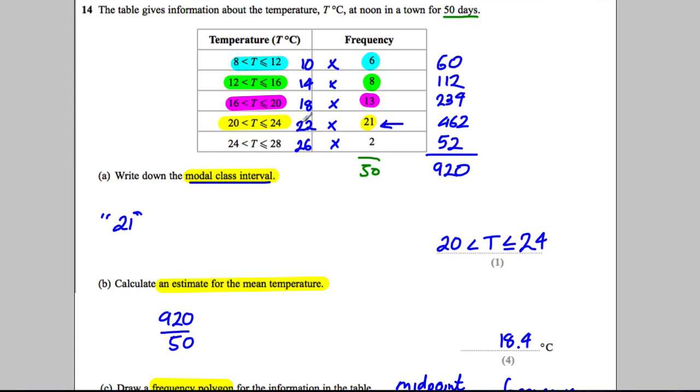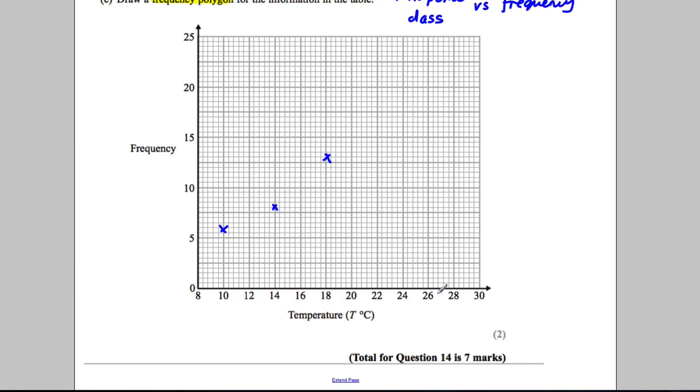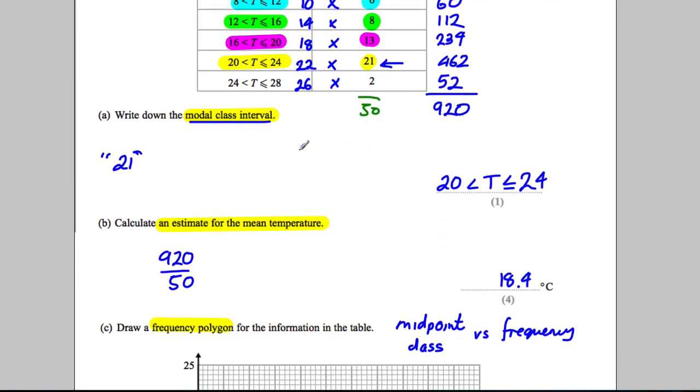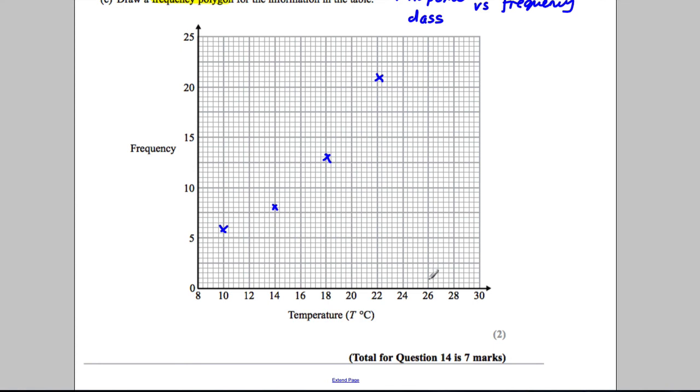Then we're going to plot 22 with 21, which would be here. And lastly, we're going to plot 26 with 2, so 26 would go here with 2. And we're supposed to join up the points as follows. And that there would be our frequency polygon.